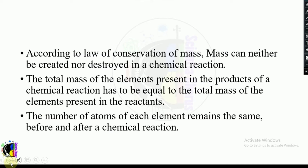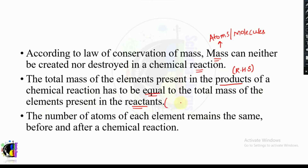According to the law of conservation of mass, mass can neither be created nor destroyed in a chemical reaction. Mass here refers to the number of atoms present in a chemical equation. The total mass of the elements present in the products on the right hand side has to be equal to the total mass of the elements present in the reactants on the left hand side.